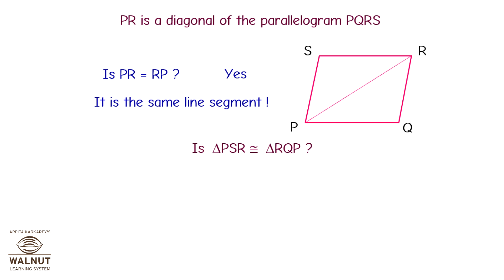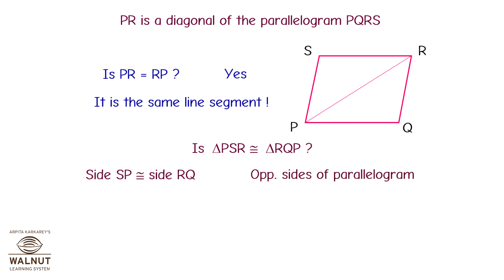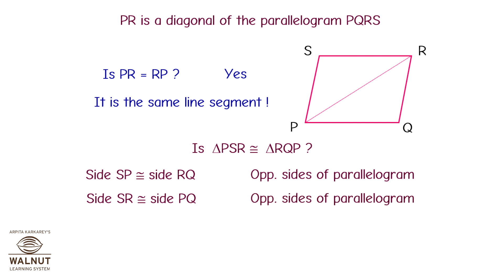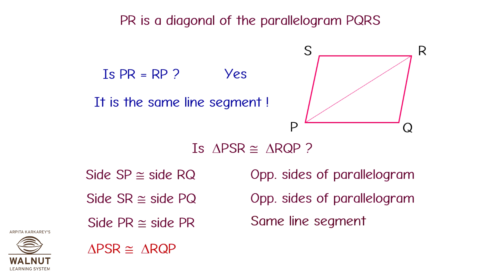Is triangle PSR congruent to triangle RQP? Side SP is congruent to side RQ (opposite sides of a parallelogram). Side SR is congruent to side PQ (opposite sides). And side PR is congruent to side PR (same line segment). Therefore, triangle PSR is congruent to triangle RQP by the Side-Side-Side test.